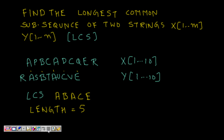The question we are going to deal with is: find the longest common subsequence of two strings x1 to m and y1 to n. We are given two strings of different lengths m and n and we have to find if they have any common subsequence. Let's take one example.